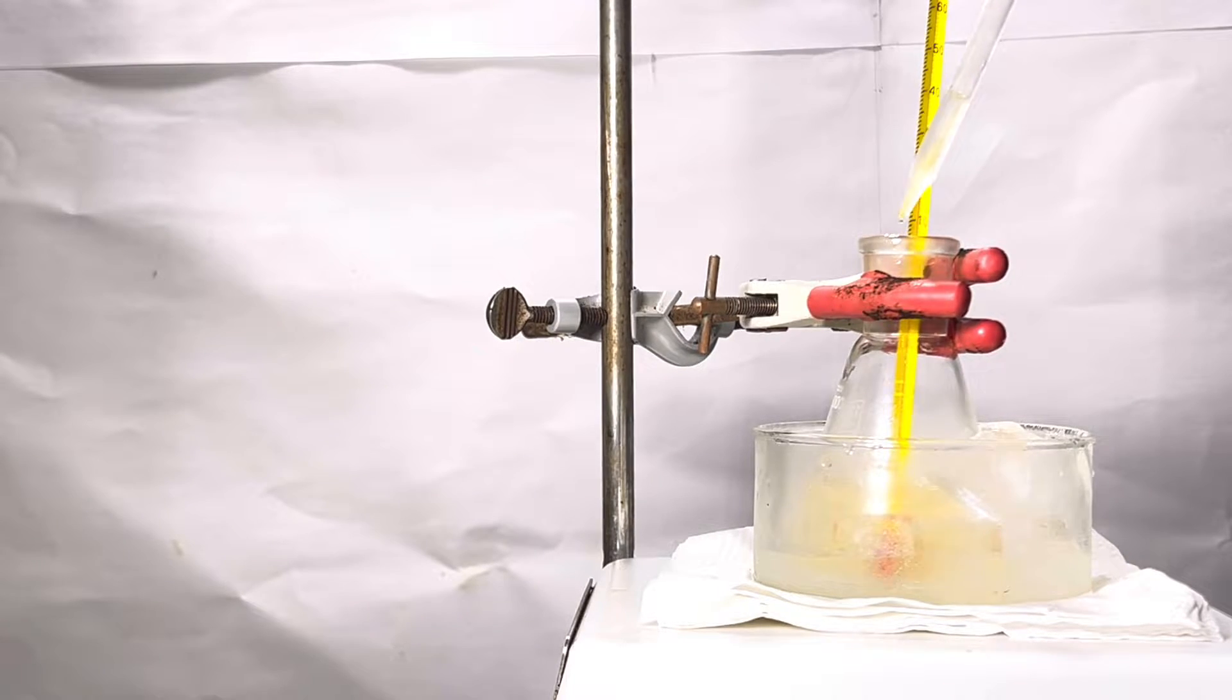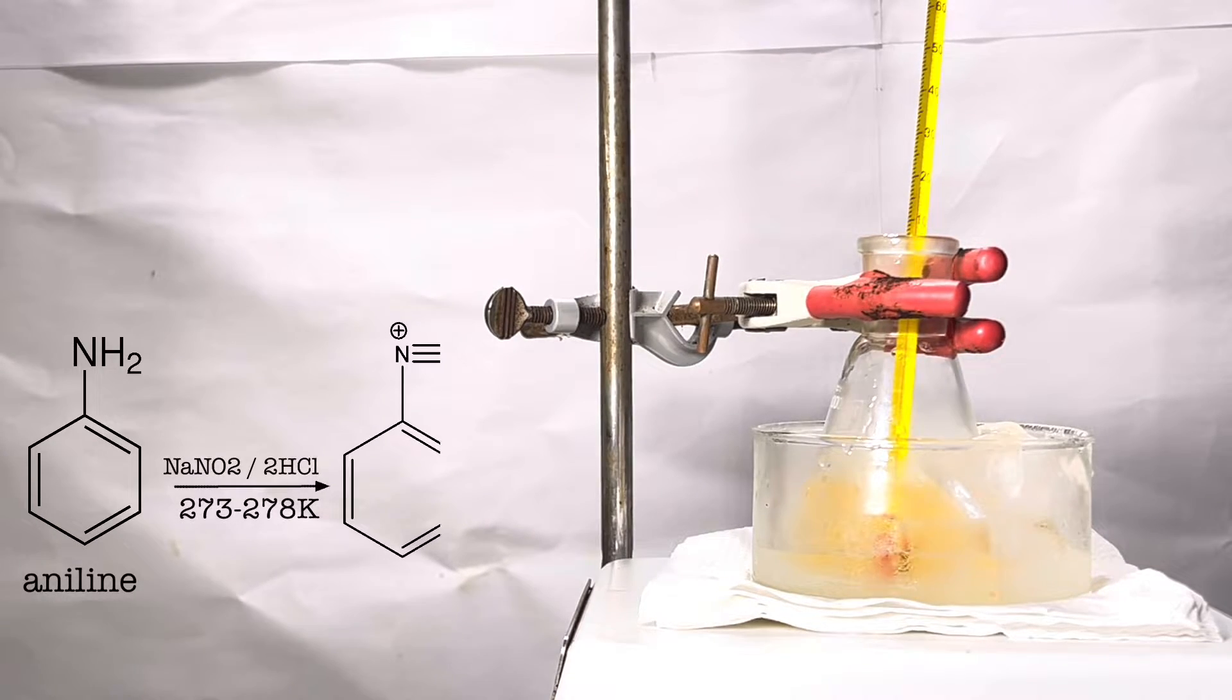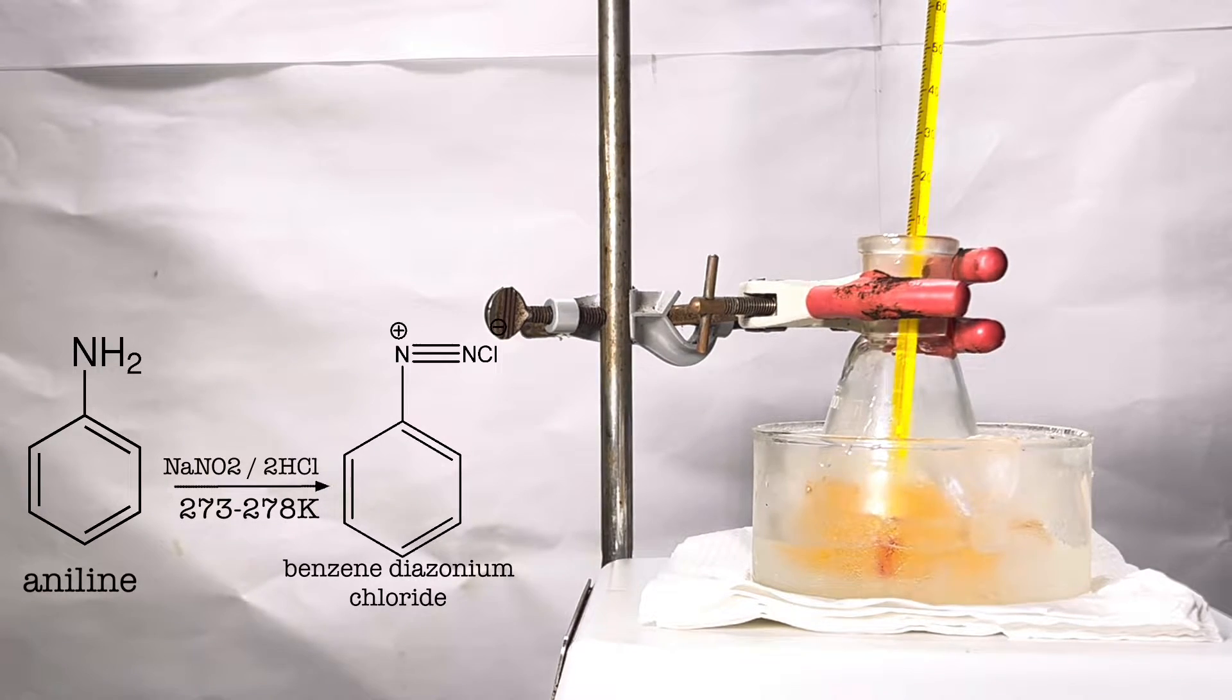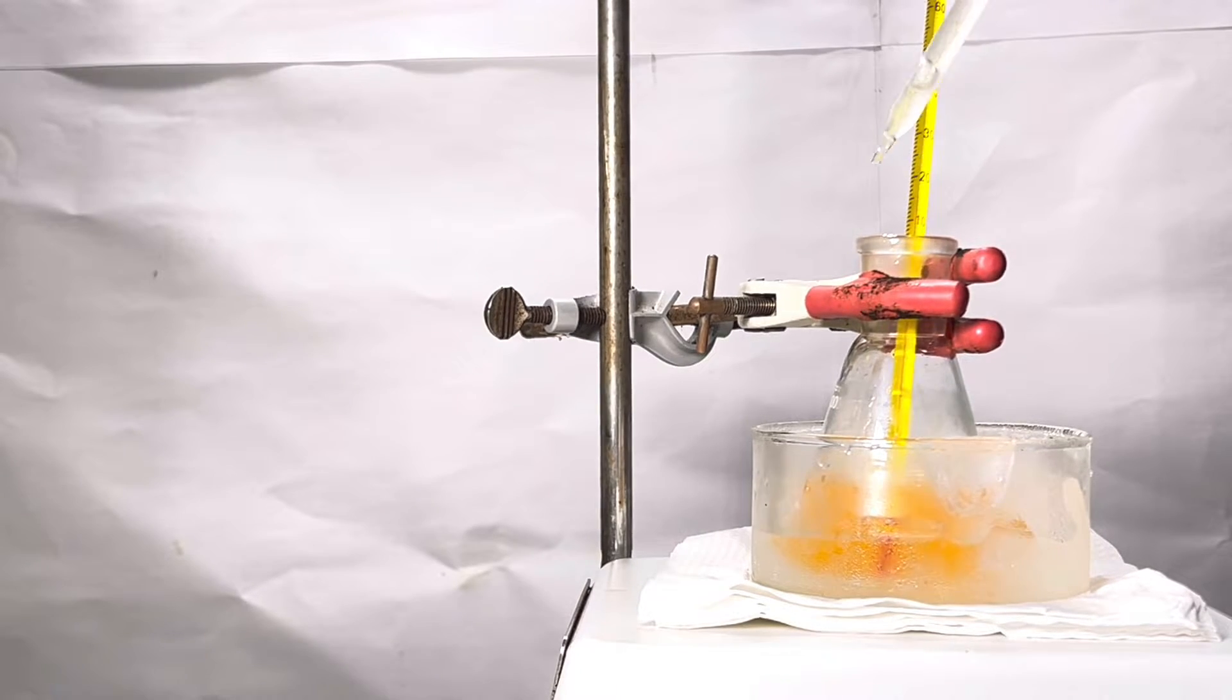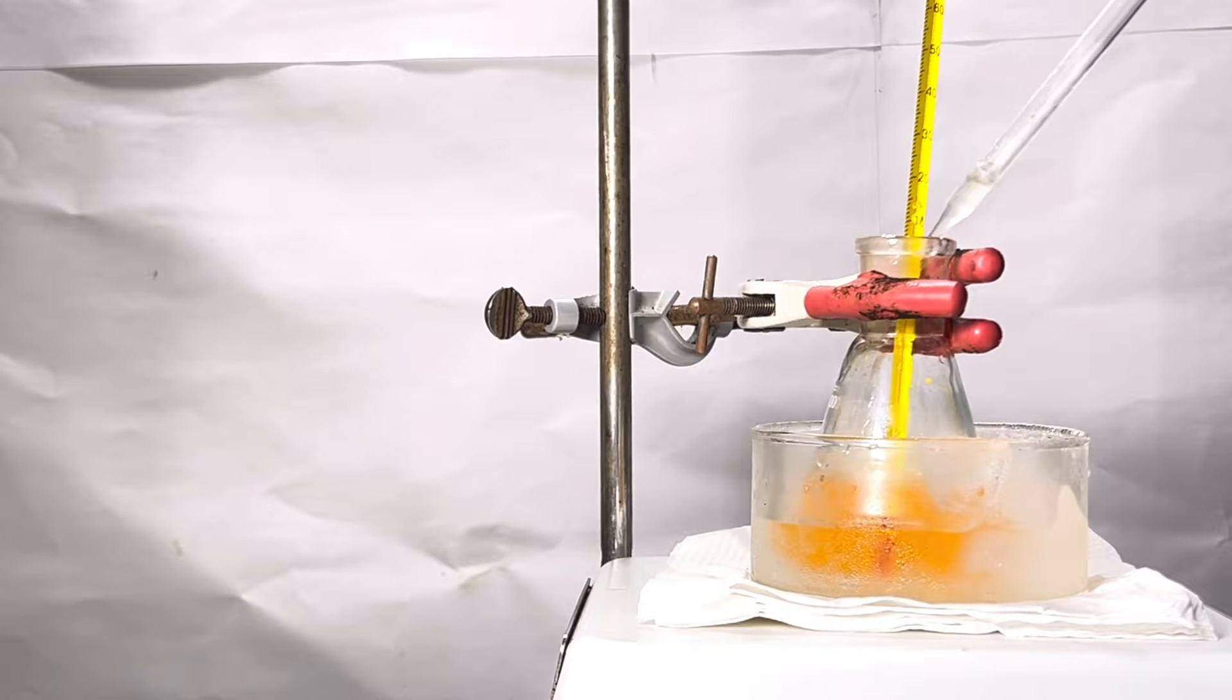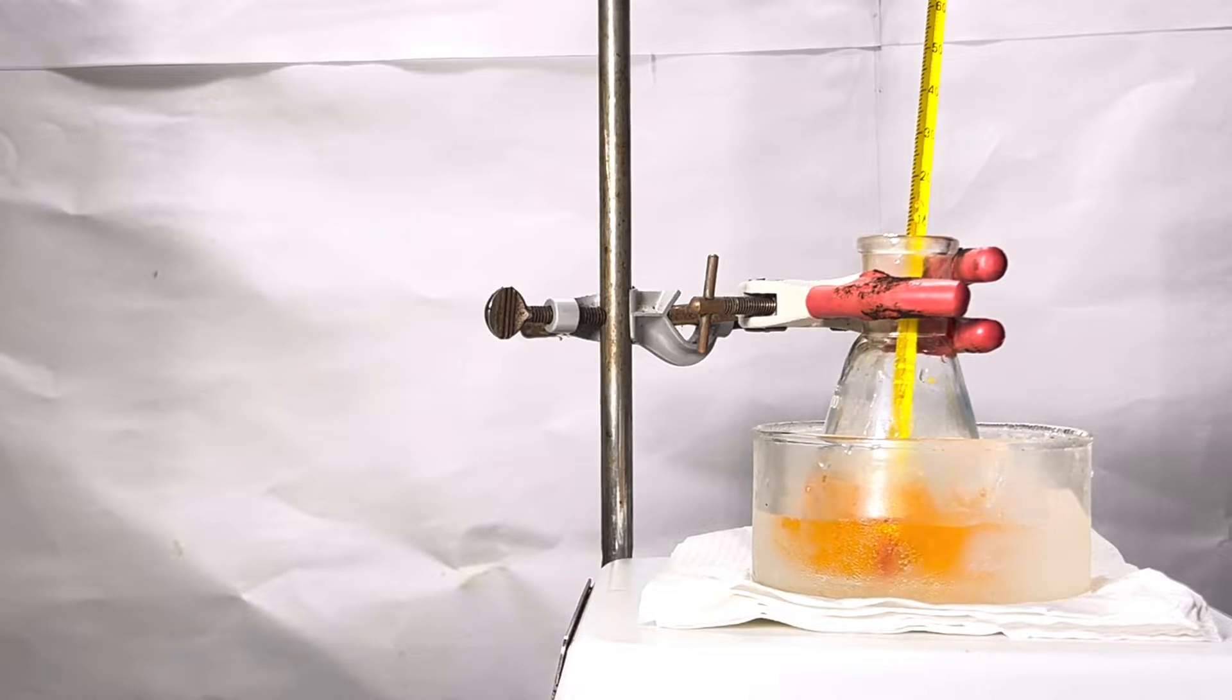At lower temperature, diazotization of aniline takes place forming benzene diazonium chloride. The complete addition of sodium nitrite took about 5 minutes. The color of the solution has turned orange with some dark precipitate floating around. There is no need to remove it by filtration.